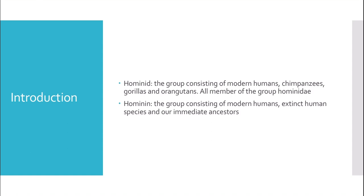For the introduction: Hominid is the group consisting of modern humans, chimpanzees, gorillas, and orangutans — all members of the group Hominidae. Then Hominin is the group consisting of modern humans, extinct human species, and immediate ancestors, such as Homo erectus and Homo habilis.